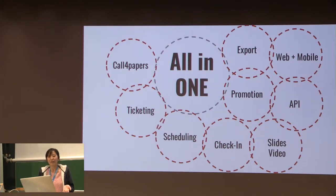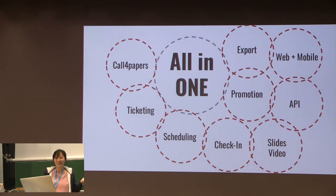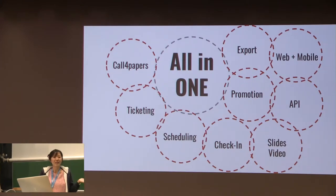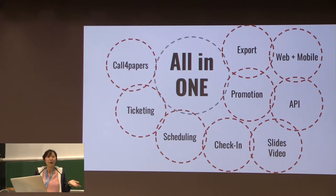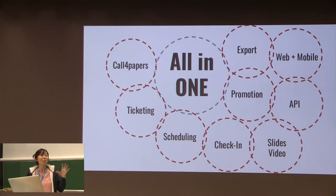It comes with a lot of functions. For instance, a customizable call for papers, a ticketing system, and scheduling for a lot of events. Even tech events often rely on spreadsheets to schedule their program, but with EventYate you don't have to rely on Google anymore. There is a check-in function with a QR code. You can upload slides and videos of your speakers. There's a promotion option — you can offer discount codes for your friends and the people you know. And we have an extensive API that allows you to access your data.